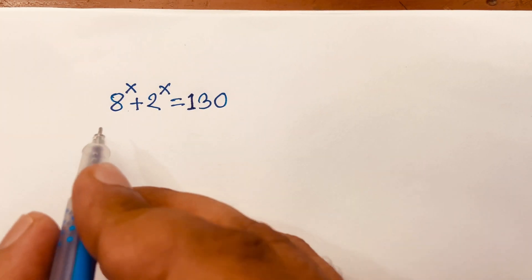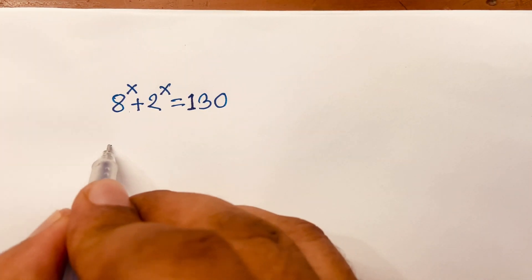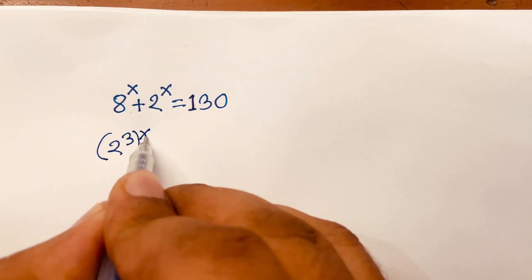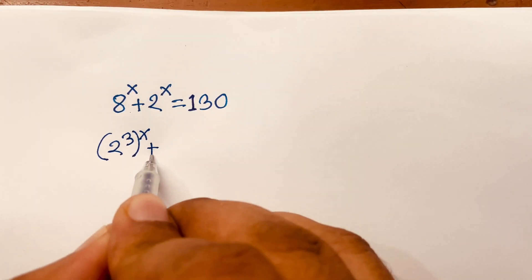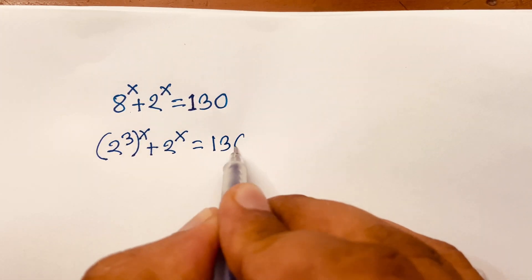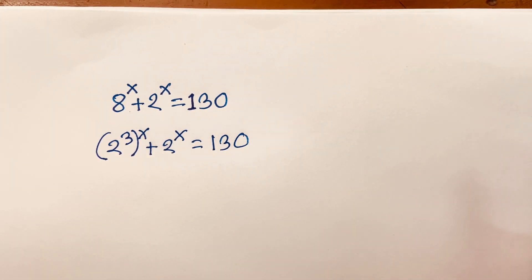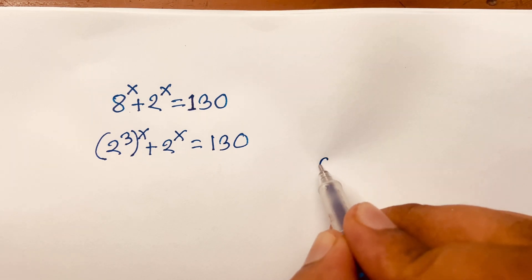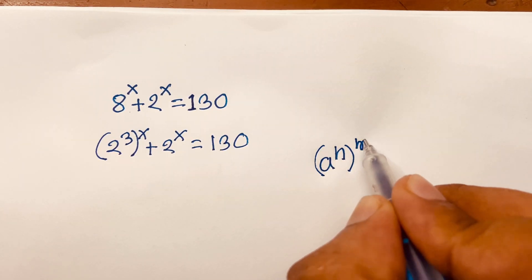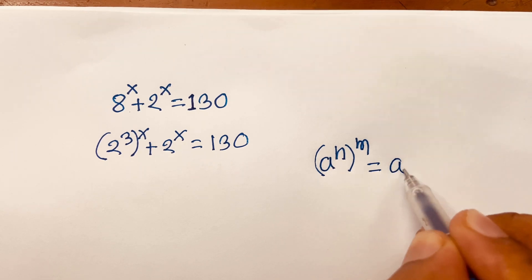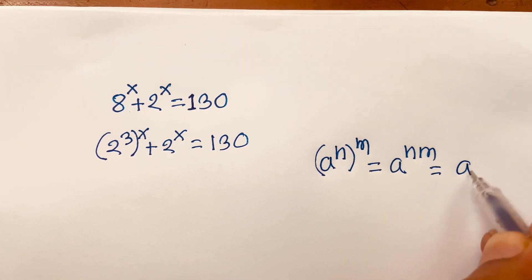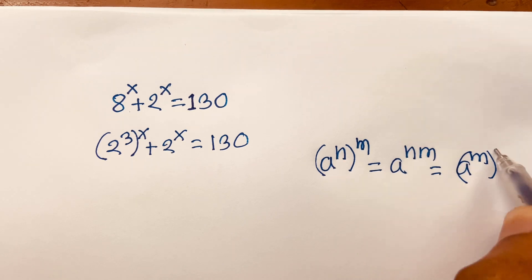First of all, I can write 8 as 2 to the power 3, so the expression becomes (2³)^x plus 2 to the power x is equal to 130. We know the exponential law: a to the power n, bracket to the power m, is equal to a to the power n times m.